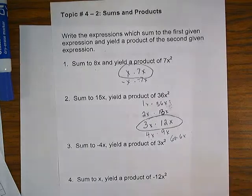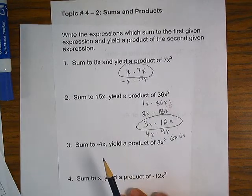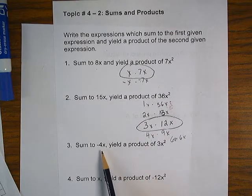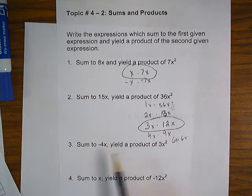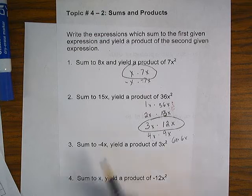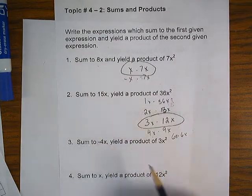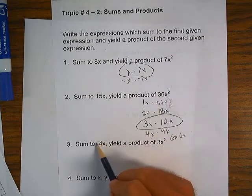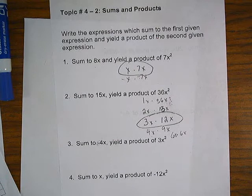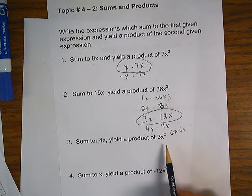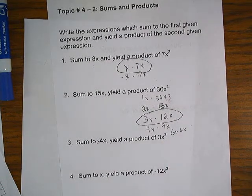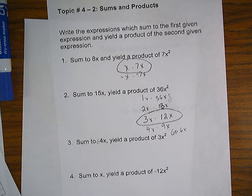Now, what do we notice on 3? They add together to be negative 4x. But they multiply to be positive 3x². So that tells me both of my answers have to be negative.